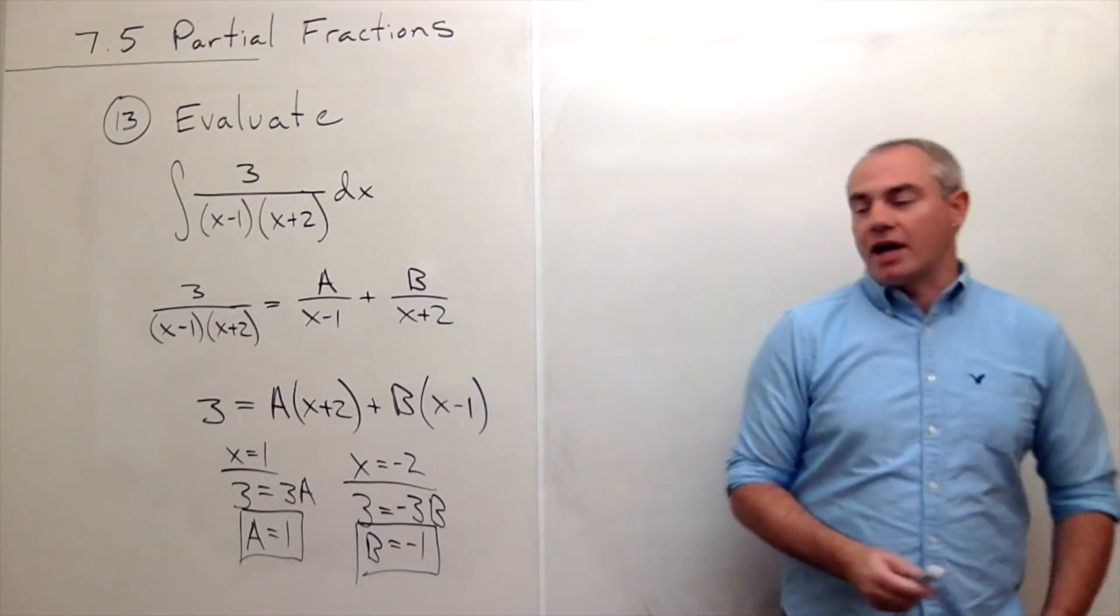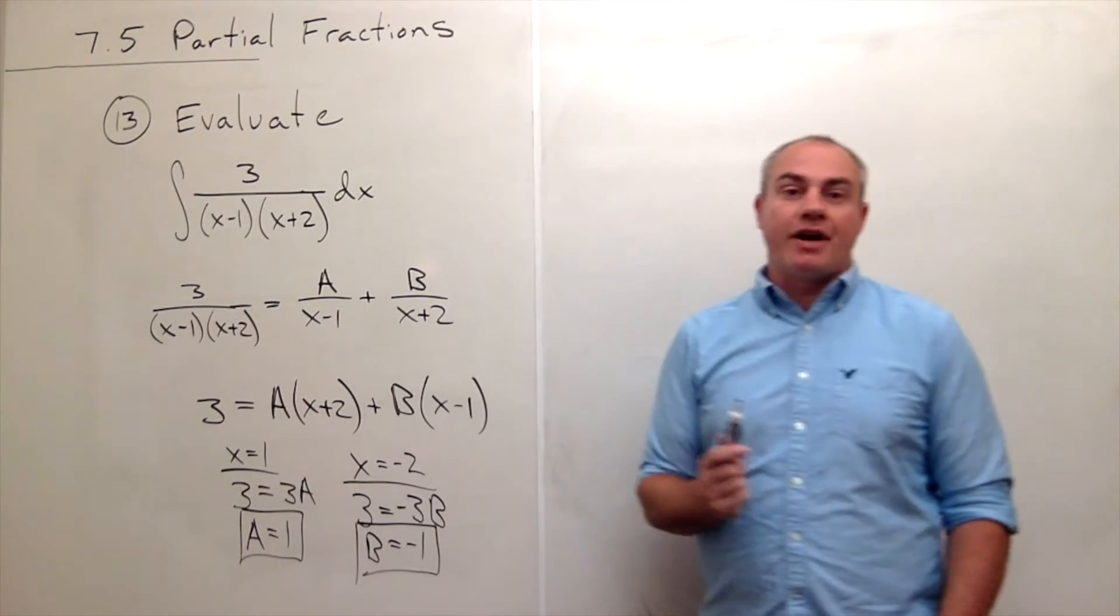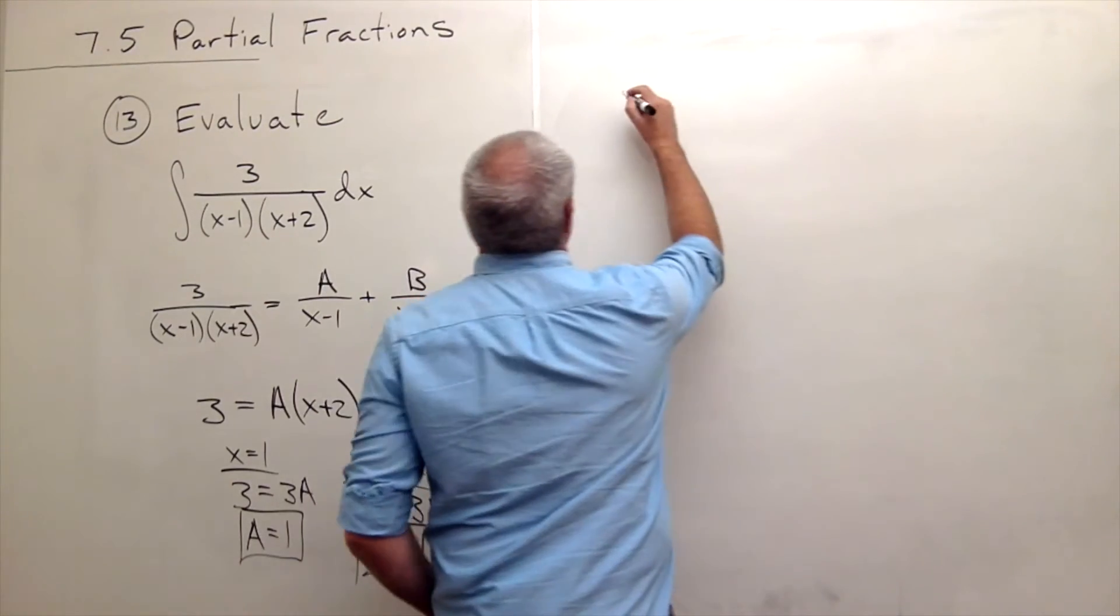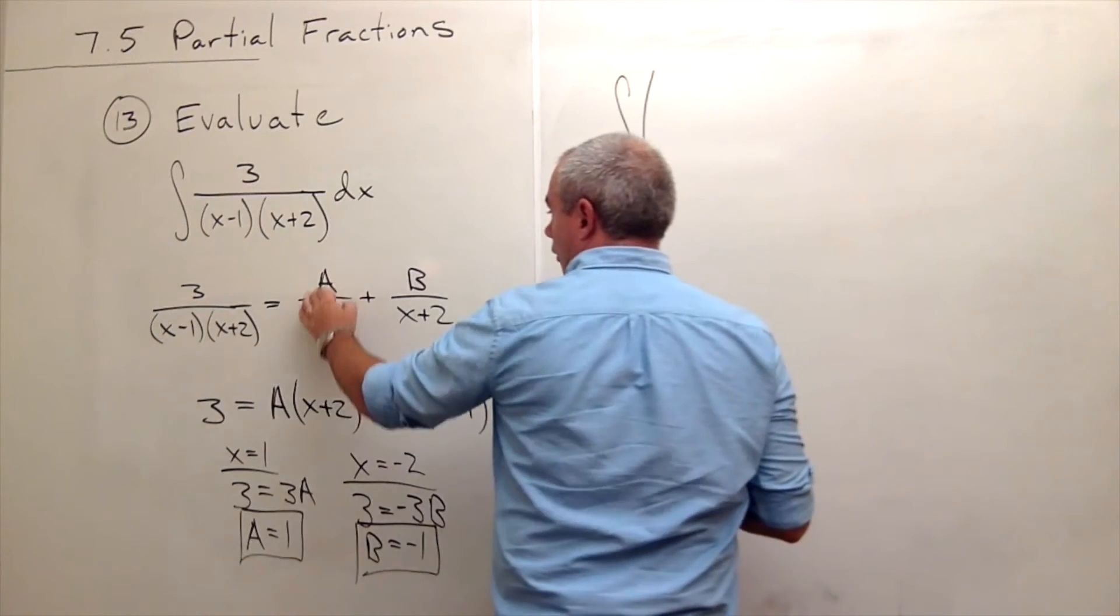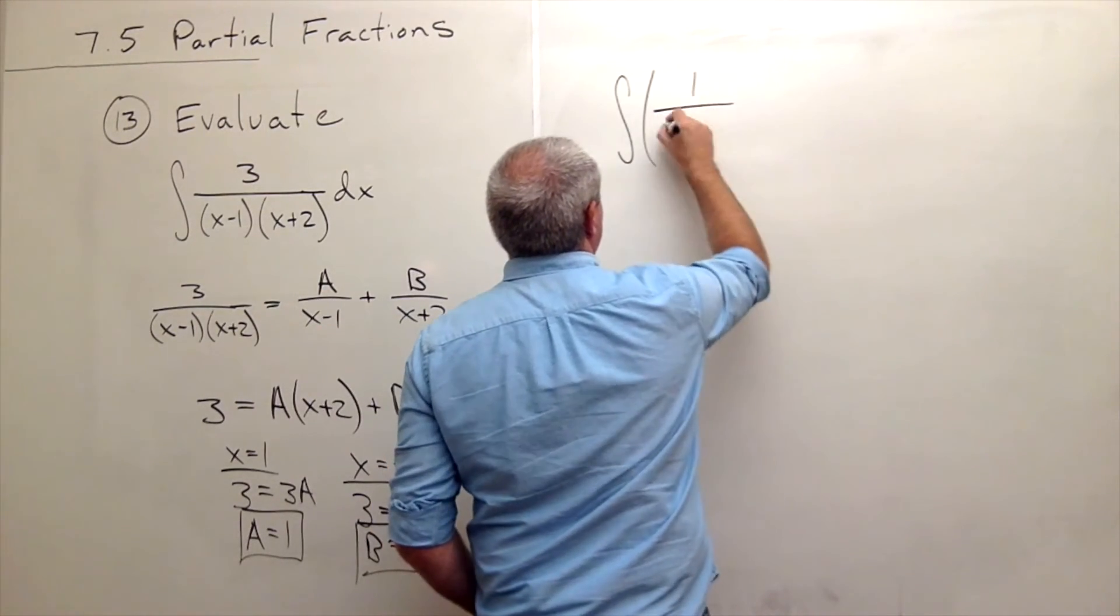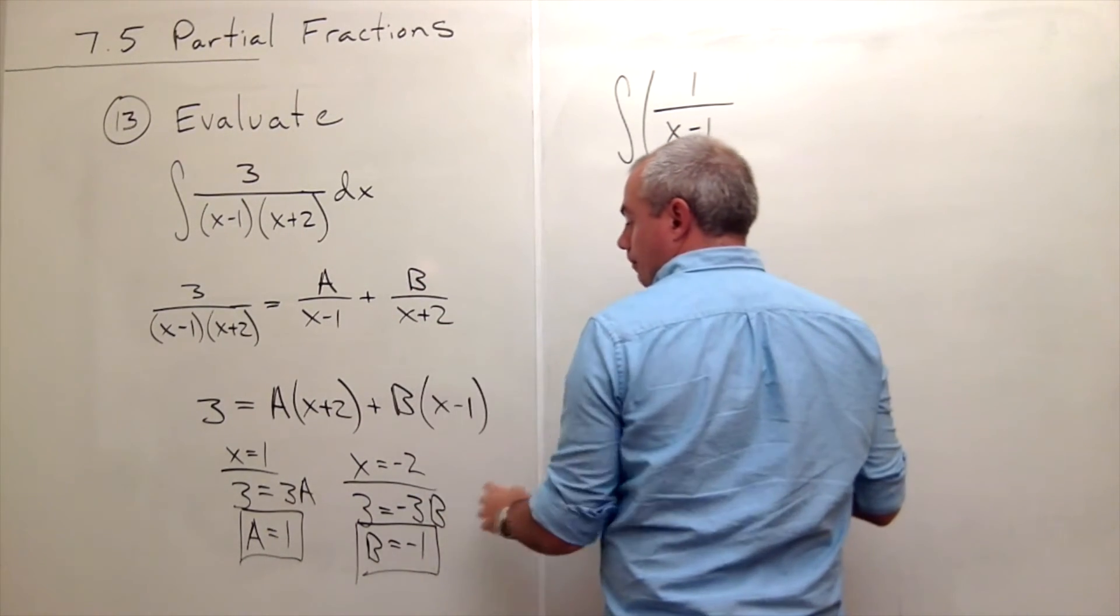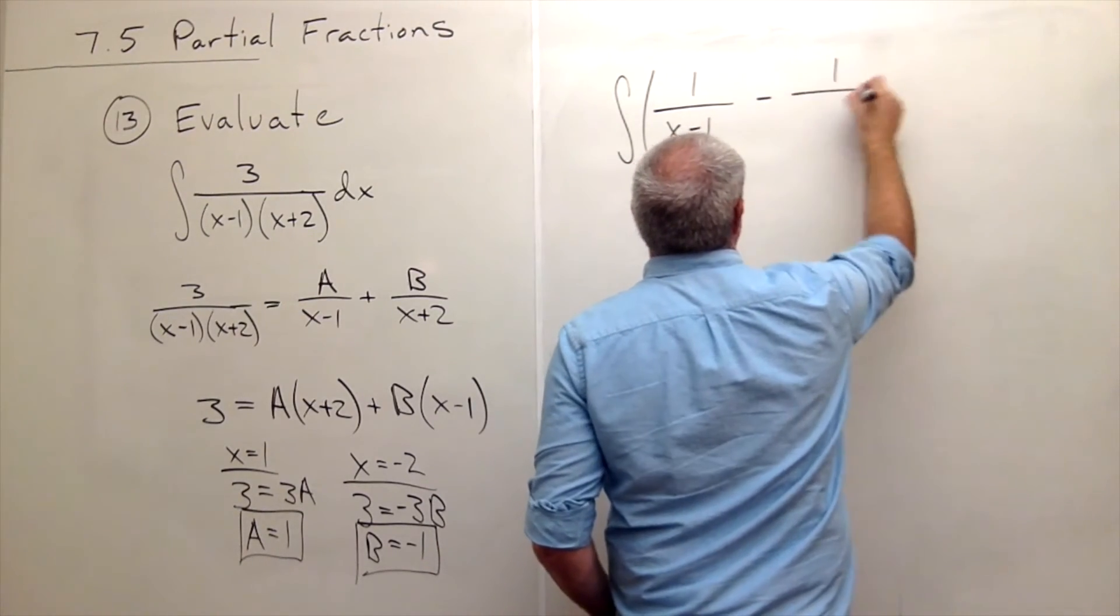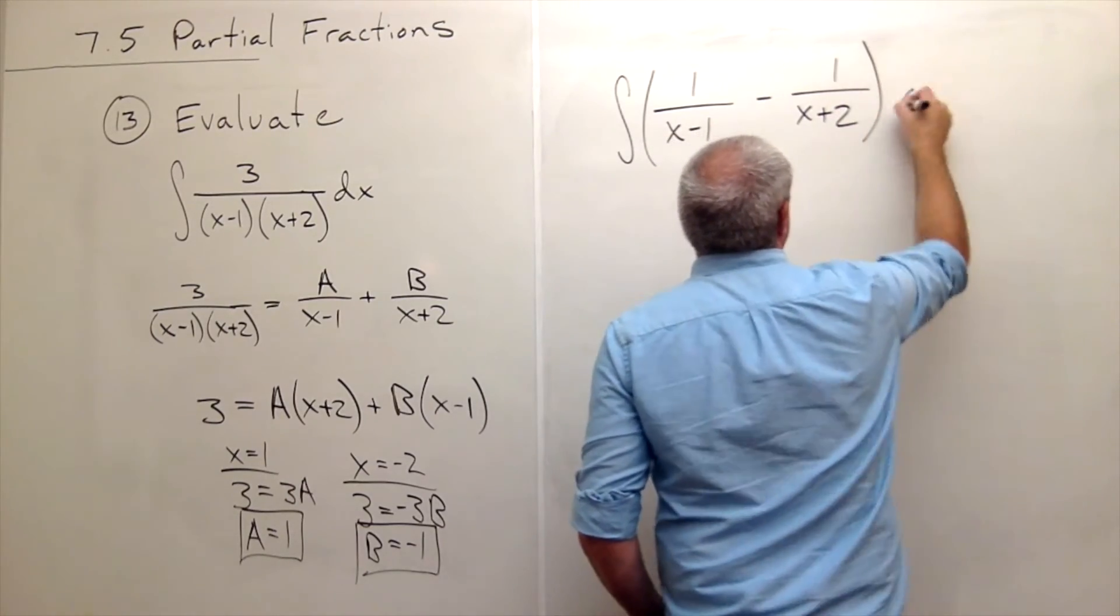So I've got A is 1, B is minus 1, so I'm ready to rewrite my integral. Now instead of computing this integral, the integral I'd like to look at is the integral of 1 over x minus 1 plus B over x plus 2. B is negative 1, so minus 1 over x plus 2 dx.